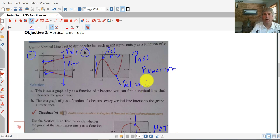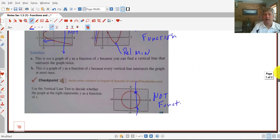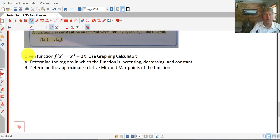That's going to be a minimum point where our function changes direction and goes from falling, rising to falling, or falling to rising, is going to be a relative min or relative maximum. So we've got a couple samples, another sample here to do. Given our function, x cubed minus 3x, use our graphing calculator. Determine the regions in which the function is increasing, decreasing, and constant. And also determine the approximate relative minimum and maximum points of the function.